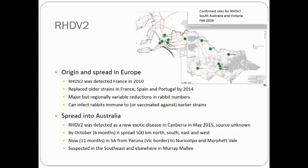In May last year it turned up unannounced in Canberra. By October it had gone 500 kilometres in every direction. It reached South Australia in December and is now present at many sites in South Australia, mostly detected in domestic rabbits. We have also heard many reports of declining wild rabbit populations, and we have a series of samples from the South East yet to confirm its presence there.